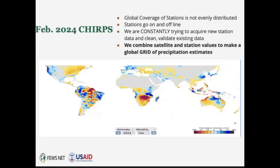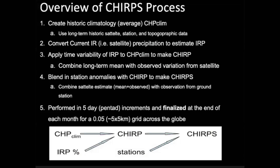We combine our station data with our infrared satellites, and this brings us CHIRPS. Just to give you an idea of what this looks like: this is the most recent CHIRPS product from February of 2024, showing rainfall anomalies — observed precipitation difference from the mean. Gray areas are roughly around the mean; red is below the mean; blue is above the mean. I'm going to go into the sausage behind CHIRPS and then move on to more fun stuff with survey data and what we're doing with IDEA.